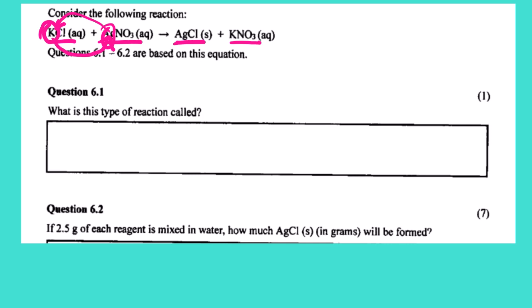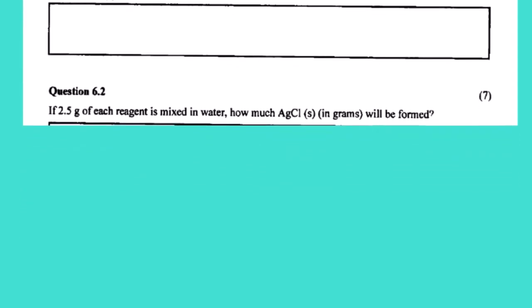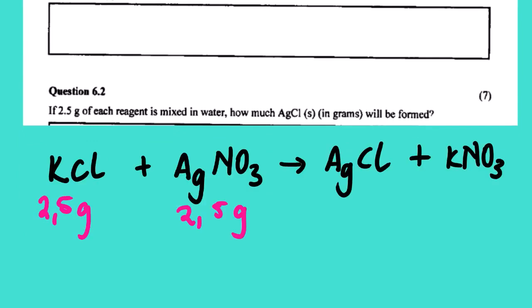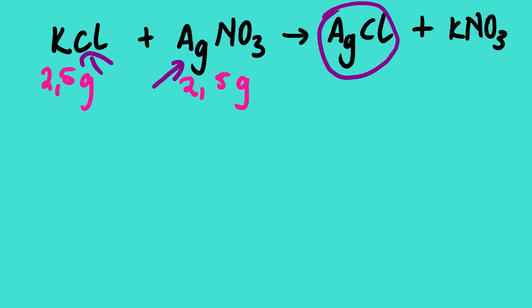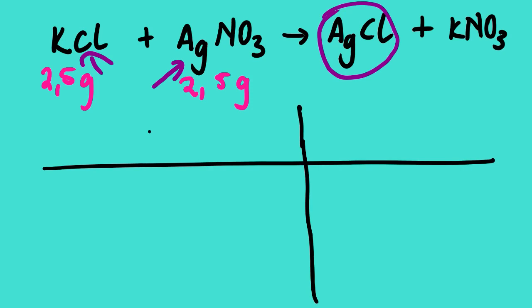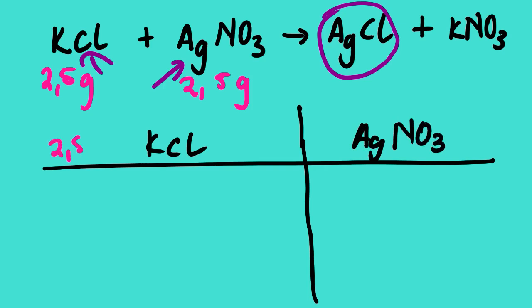Now let us look at 6.2. It says if 2.5 grams of each reagent is mixed in water. Let us quickly find our limiting reagent so that we can use it to find the mass of the precipitate formed in grams. Normally the method I use is to place the two reagents on a table — we are given 2.5 grams of each.